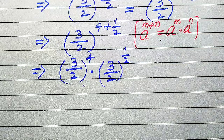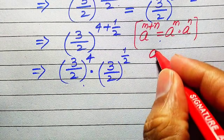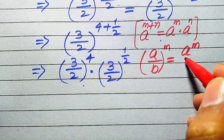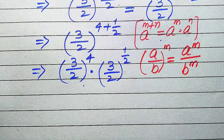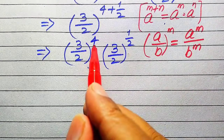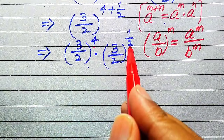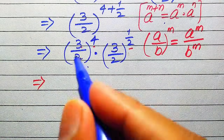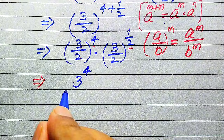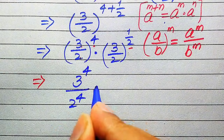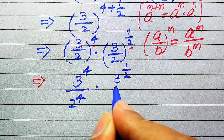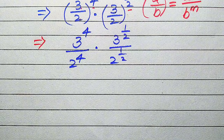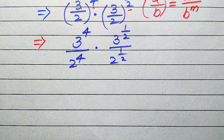Further, we use another law: (a divided by b) to the power of m equals a to the power of m divided by b to the power of m. According to this rule, we apply the exponent 4 separately on both terms, and also apply the exponent 1 over 2 separately on both terms. After applying this law, it is written as 3 to the power of 4 divided by 2 to the power of 4, multiplied by 3 to the power of 1 over 2 divided by 2 to the power of 1 over 2.